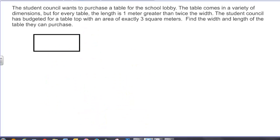So now we're trying to purchase a table. And it comes in a variety of dimensions. The length is 1 meter greater than twice the width. So let's call this width x and call this 1 more than twice x. And we're going to budget for a table top that has an area of 3. So this area is equal to 3. We want to find the length and the width of the table they can purchase.